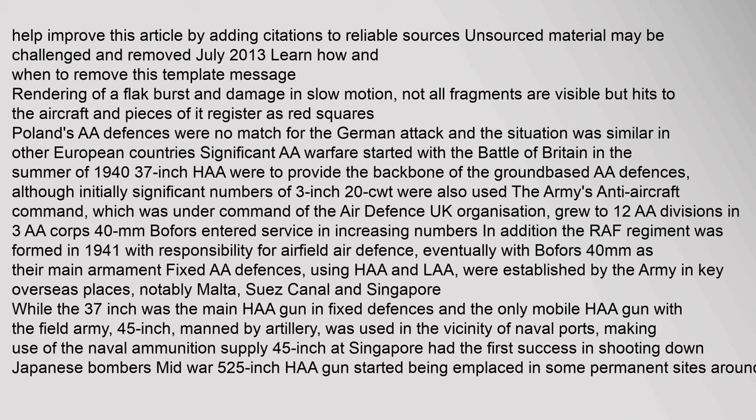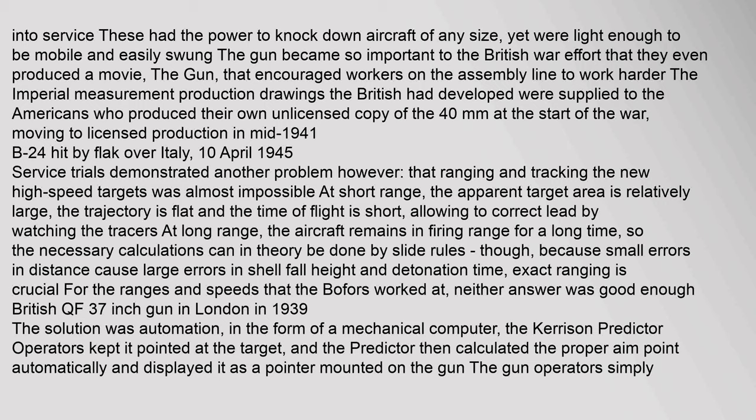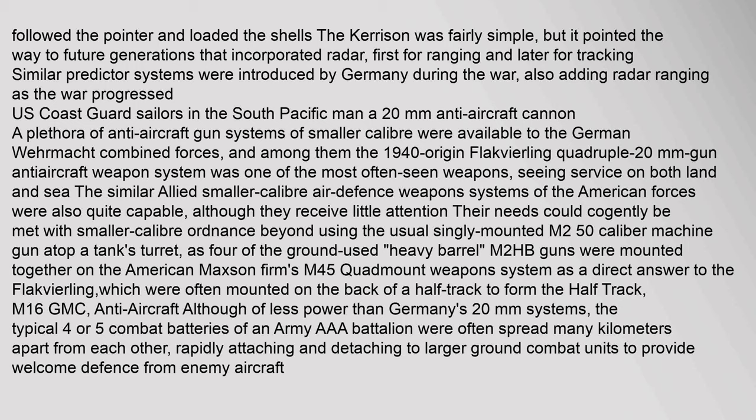The 5.25-inch HA gun started being emplaced in some permanent sites around London and was also deployed in dual-role coast defense/AA positions. Germany's 88mm Flak gun proved highly effective in action against Allied bombers, being powerful enough to knock down aircraft of any size yet mobile enough to be easily repositioned. The 40mm Bofors gun became so important to the British war effort that they even produced a movie, 'The Gun,' to encourage assembly line workers. The British imperial-measurement production drawings were supplied to the Americans, who produced their own unlicensed copy. Similar predictor systems were introduced by Germany during the war, also adding radar ranging as the war progressed.